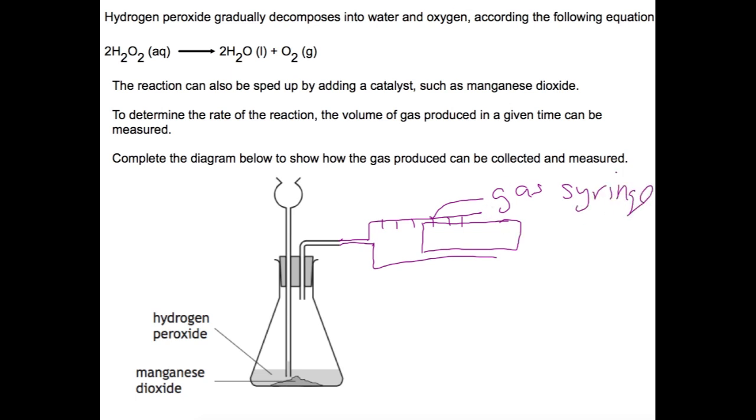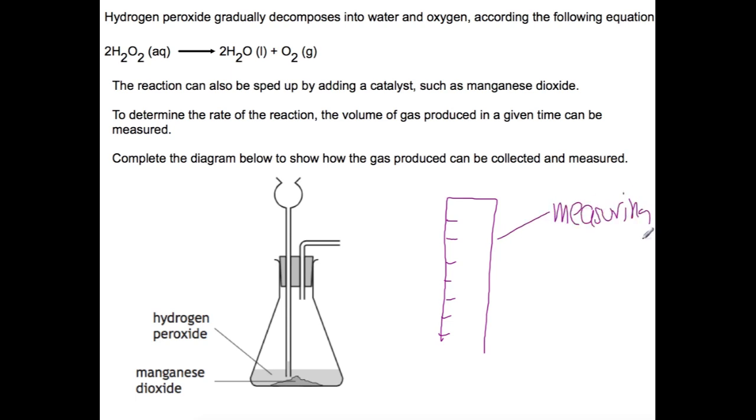Now the second way that we could do this reaction is to bubble the gas through water. This is a method that you've likely used in class at some point. The easiest way to start drawing the displacement of water is to start with your measuring cylinder and it'll be upturned. Put a scale down the side and we can label this measuring cylinder. Then add in the trough of water but leave it empty just now and then continue your tube down. So we're starting with the bottom of the tube here.